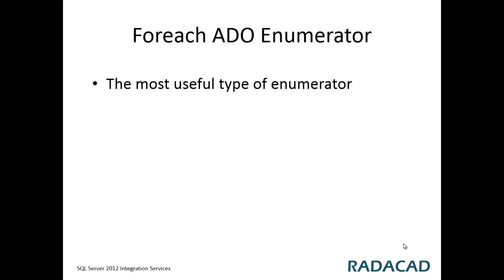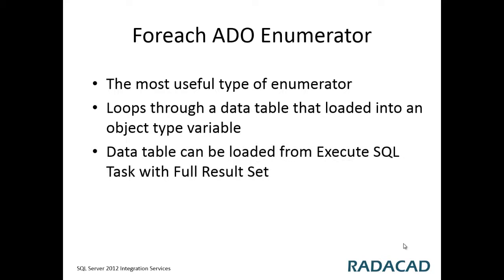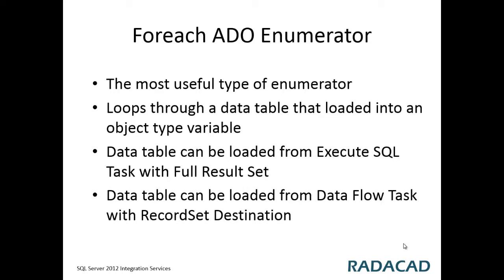The ADO enumerator is for looping through a data table that is loaded within an Execute SQL task or from a Data Flow task. That data table will be loaded into an object-type variable, and we can loop through it. When loading via Execute SQL task, you can set the result as full results. When loading via Data Flow task, we use the Recordset Destination, which loads data into an object-type variable.